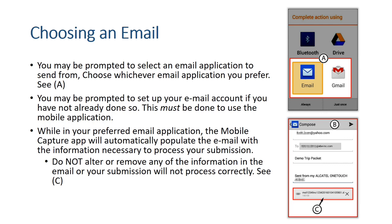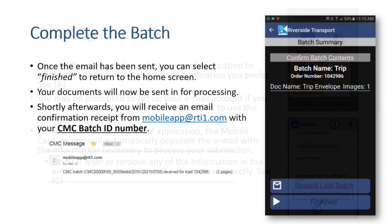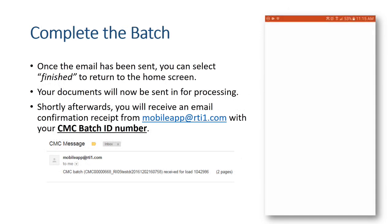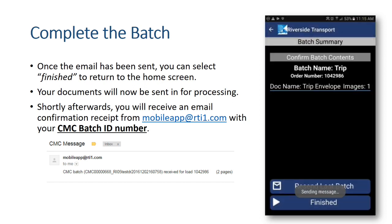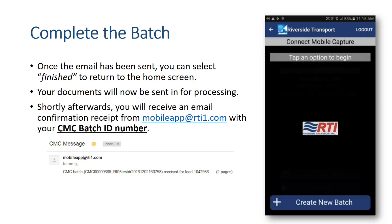See Example C. Once the email has been sent, you can select Finish to return to the home screen. Your documents will now be sent in for processing. Shortly afterwards, you will receive an email confirmation receipt from mobileapp@rti1.com with your CMC batch ID number.